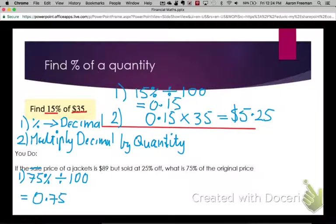The second thing we need to do is take the quantity and multiply that by 0.75. And your answer should be that the jacket would cost you $66.75.